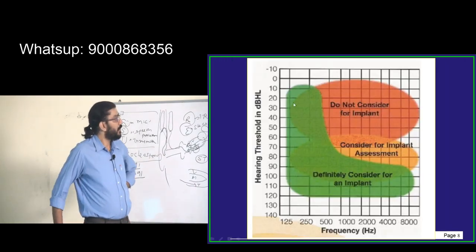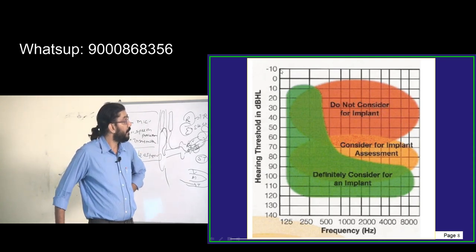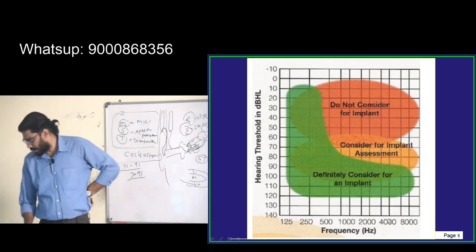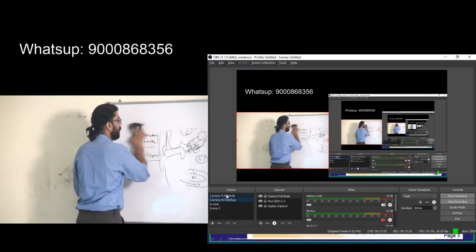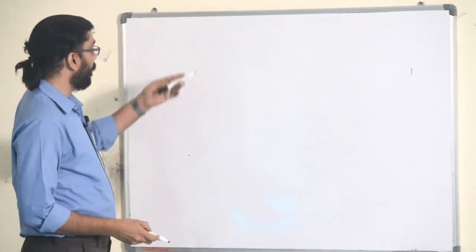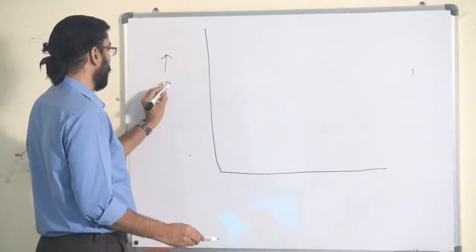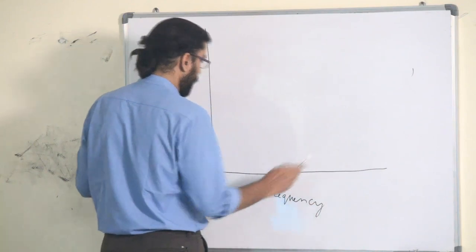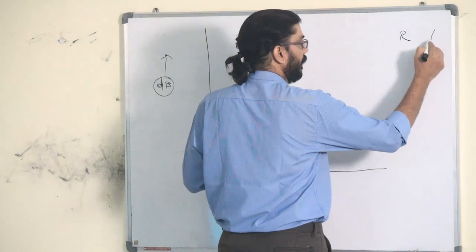Now let us look at the pure tone audiometry graph. The vertical axis represents intensity in decibels — the word 'decibel' has 'bell' which is vertically placed. The horizontal axis represents frequency. This is the basic layout of a pure tone audiogram.